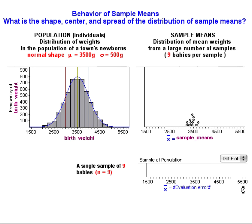One is, of course, that each sample has 9 babies in it and the sample means are calculated for each random sample. Each sample mean is graphed above and here we begin to see the distribution of sample means being built.